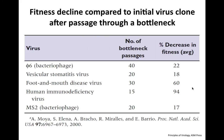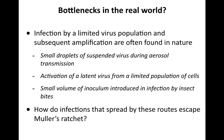Real-world examples of bottleneck effects by plaque-to-plaque passage: Phi-6 bacteriophage after 40 bottleneck passages — 22% decrease in fitness. VSV, 20 passages — 18%. Foot-and-mouth disease virus, a picornavirus, 30 passages — 60% decrease. HIV, 15 bottleneck passages — 94% decrease. Another phage, 20 passages — 17%. These are all examples of taking a virus, passing it plaque-to-plaque, and getting a reduction in fitness as a consequence of passing through the bottleneck.